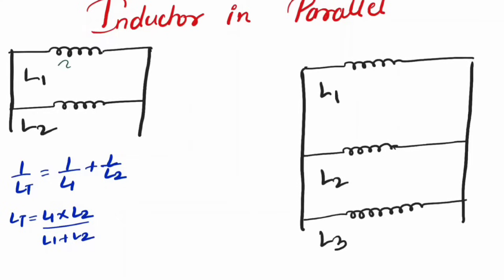If you want, you can assume some 4 and 6 Henry over here. It would be 24 upon 4 plus 6 is 10, so it would be 2.4 Henry.